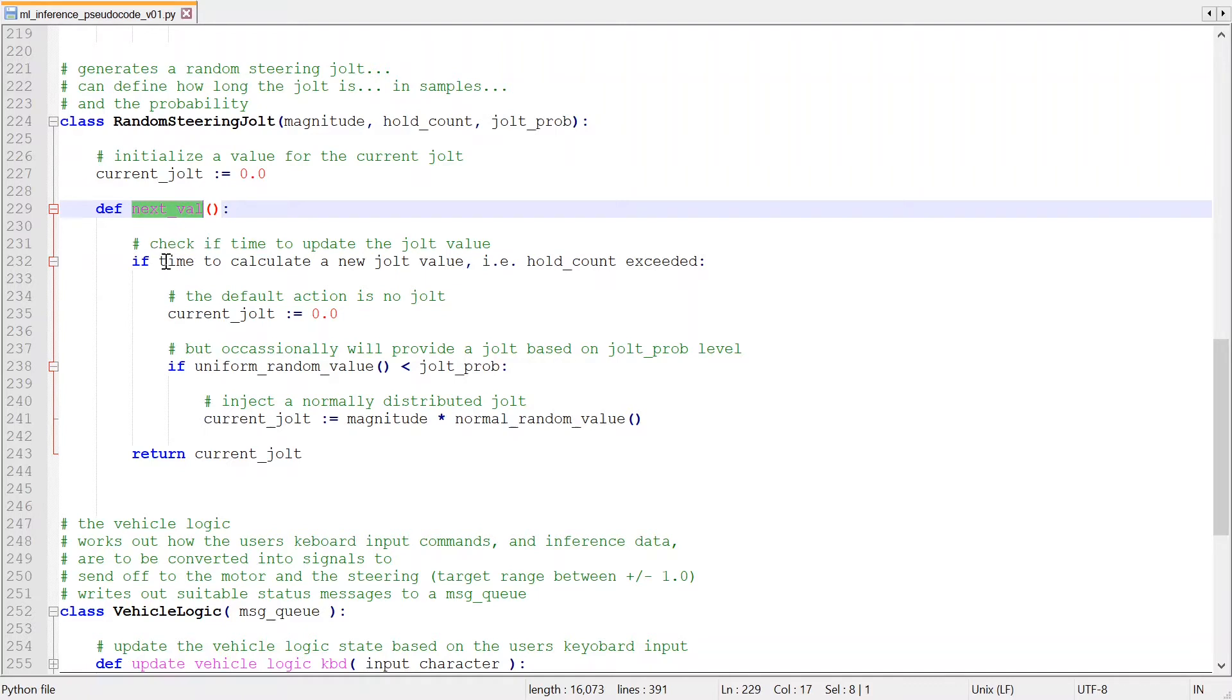So each time nextval gets called, it firstly checks if the current jolt value is still valid. Or if we need to calculate a new value. And if a new value is not needed, then we simply return the current jolt value.